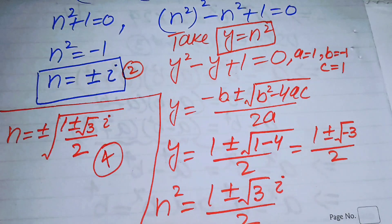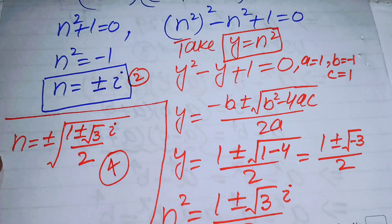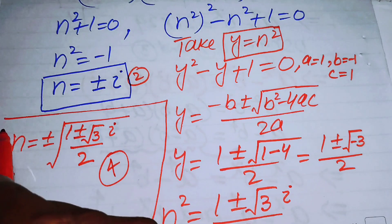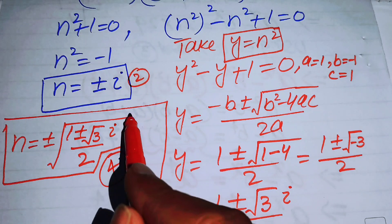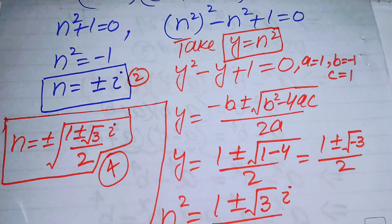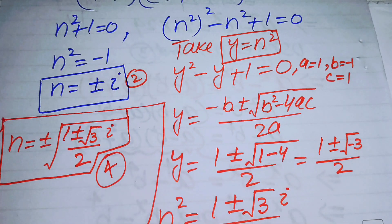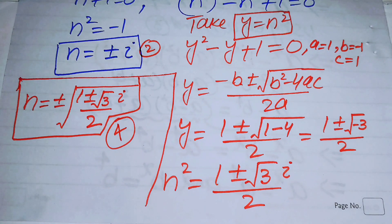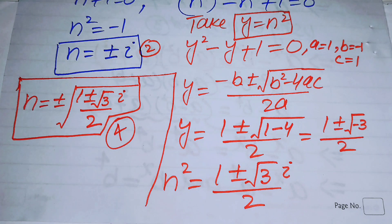In total, from equation 2 we obtain six more complex roots, giving us all 12 roots of the original equation. These are the complete 12th roots of n^12 - 1 = 0, and this is the final answer. Thank you for watching — please subscribe to the channel for more exciting videos.